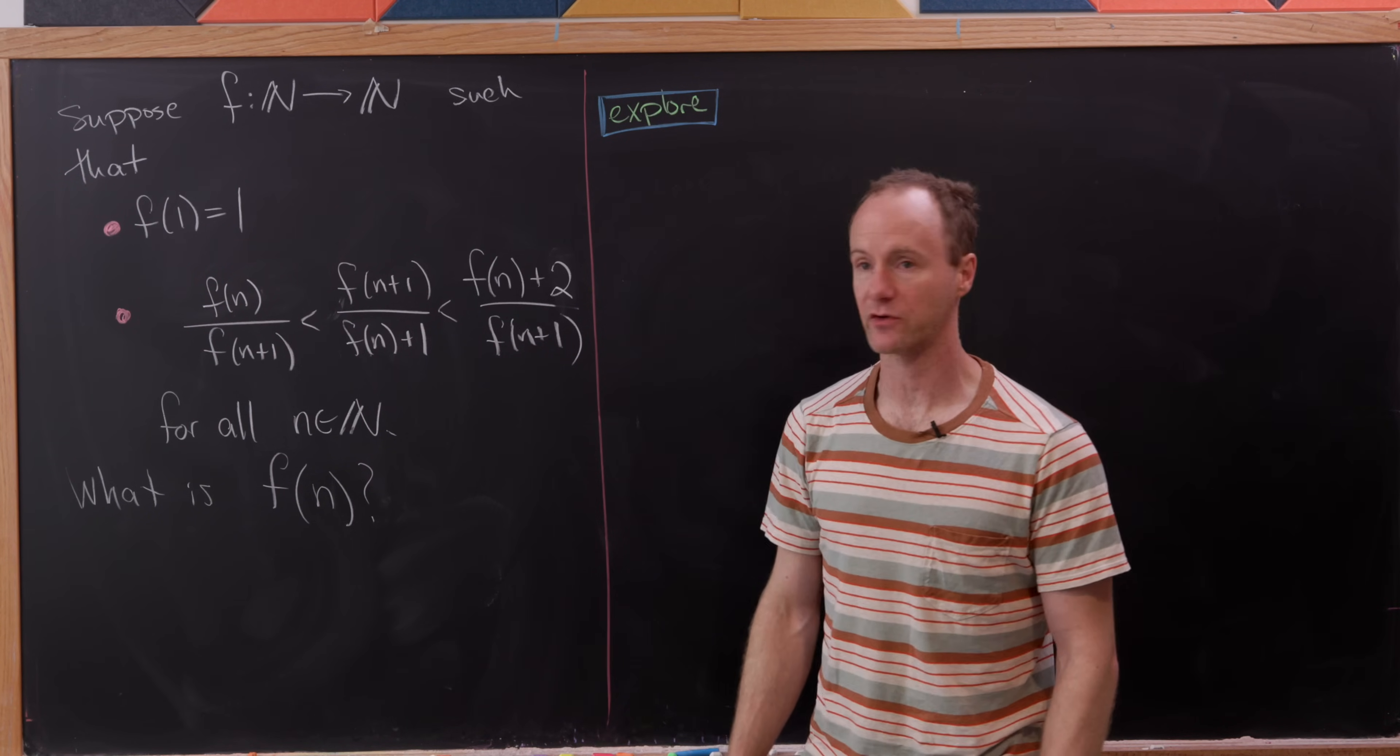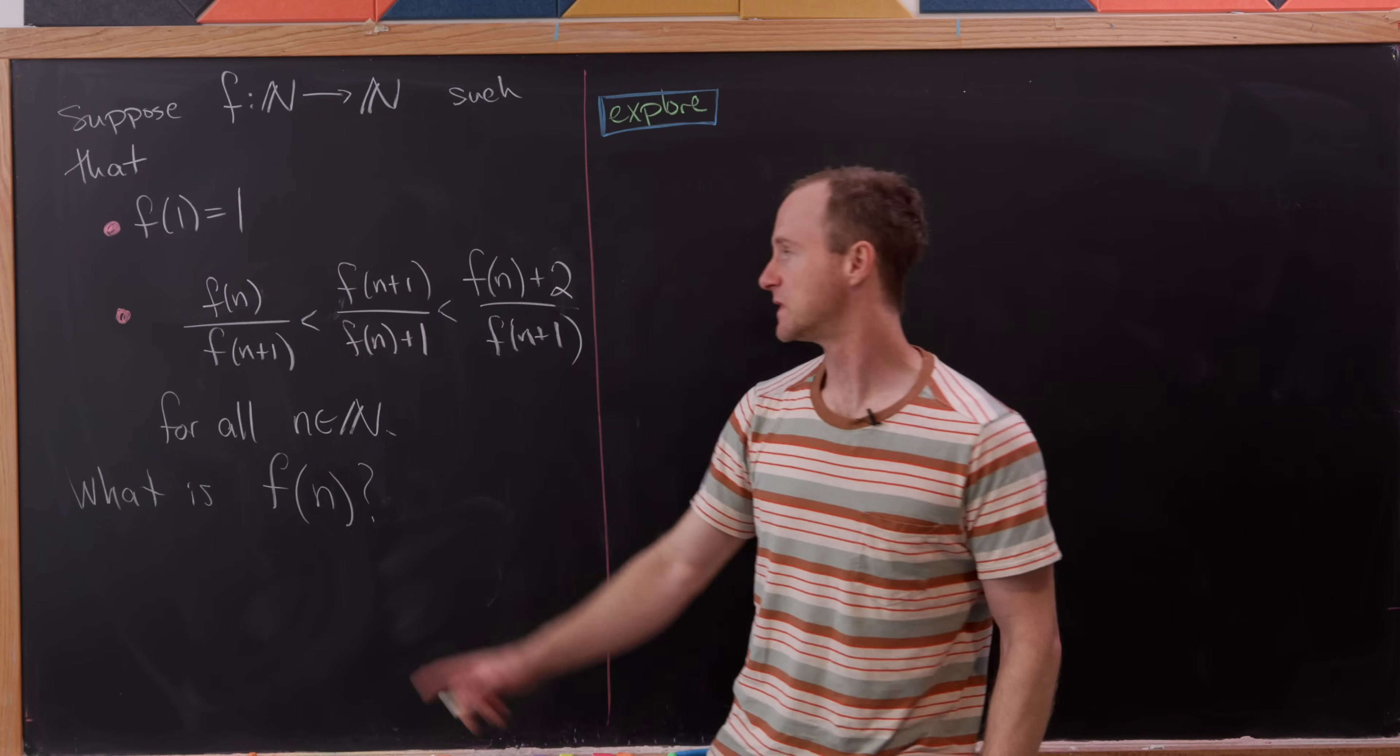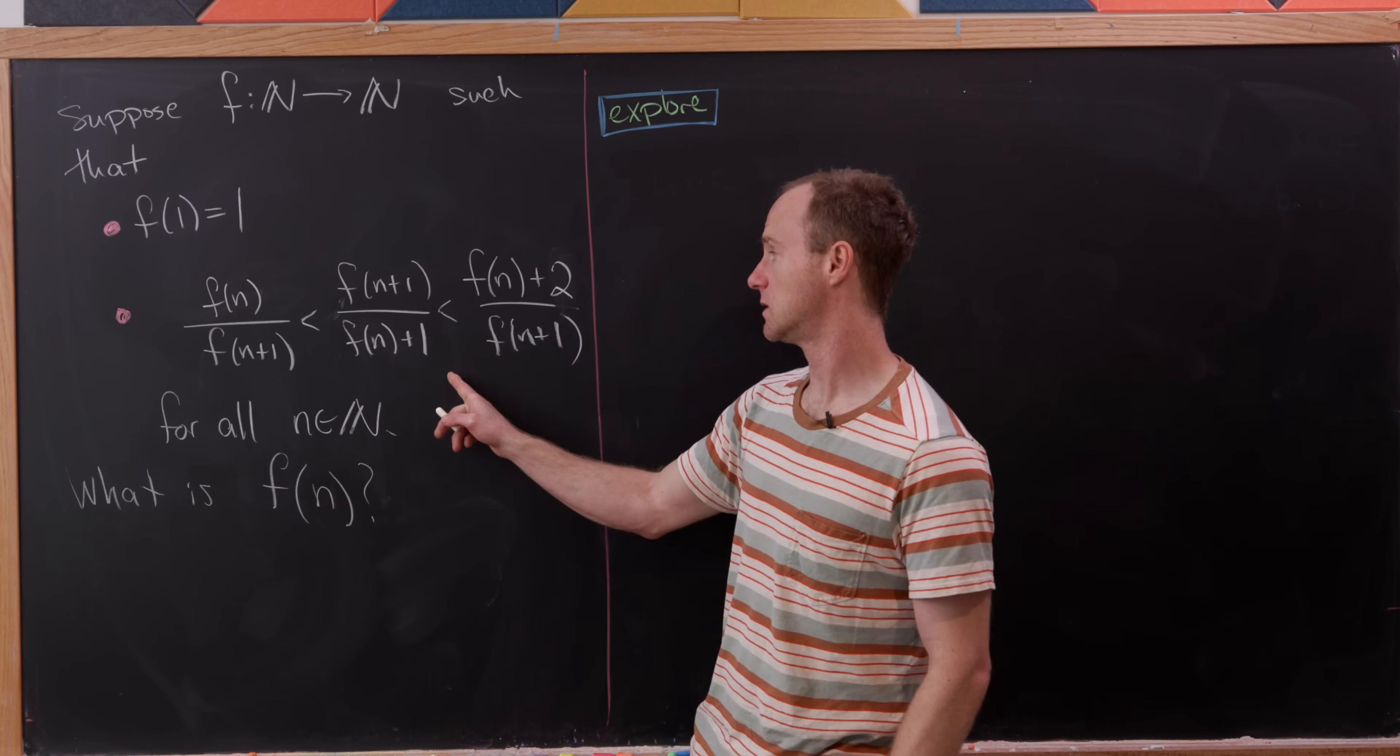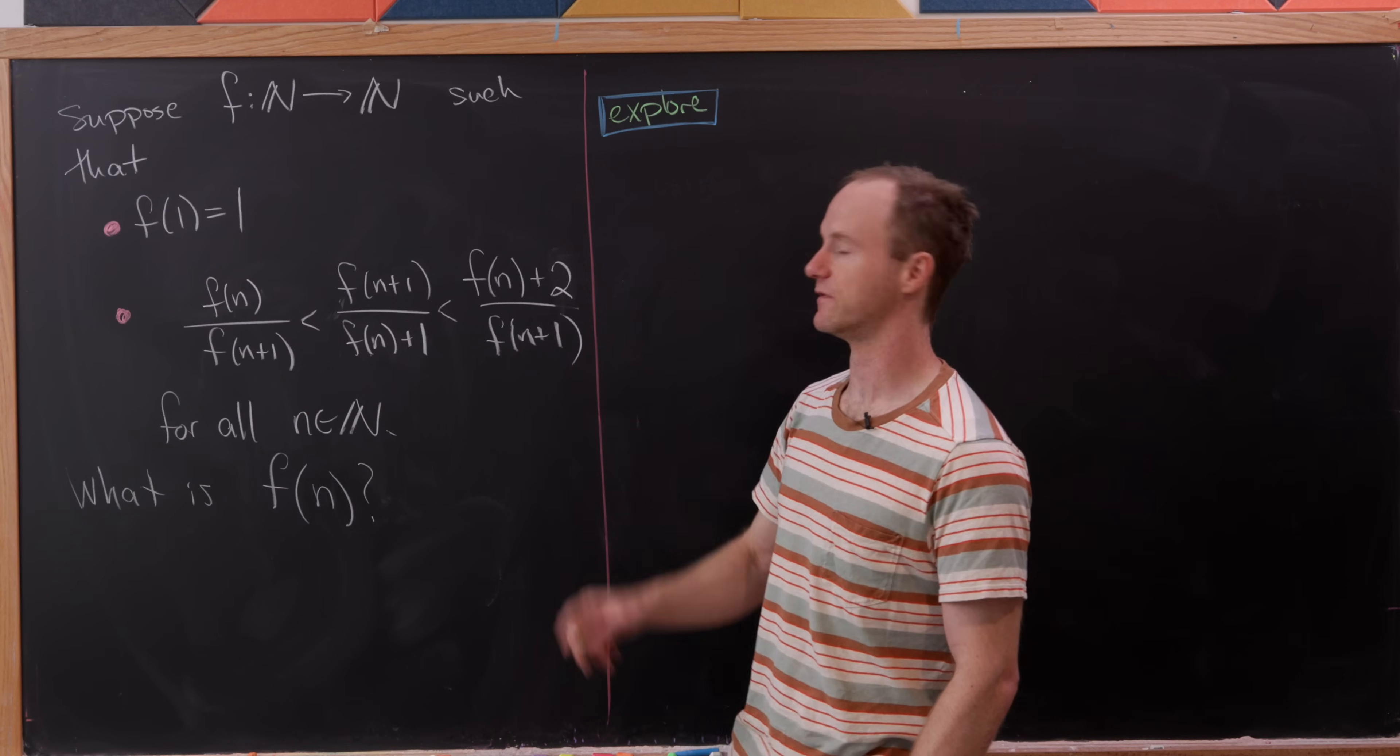And then for all n greater than or equal to one, we know that f of n divided by f of n plus one is less than f of n plus one divided by f of n plus one, which is less than f of n plus two divided by f of n plus one.